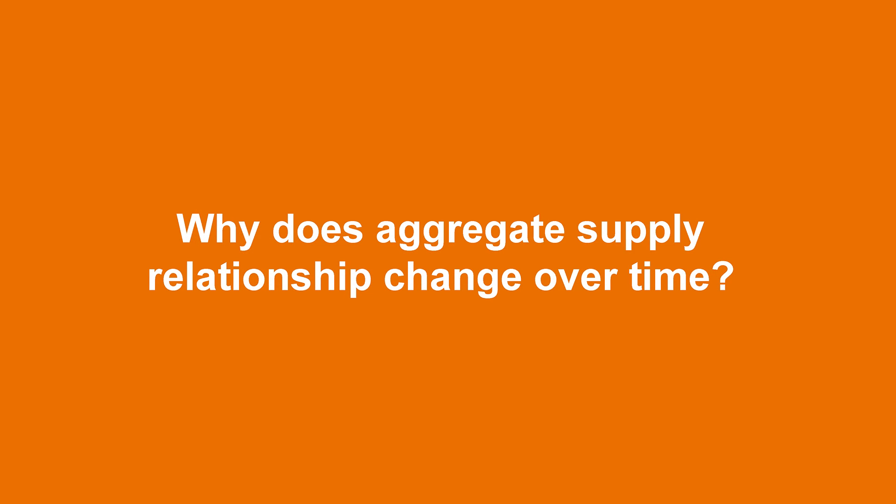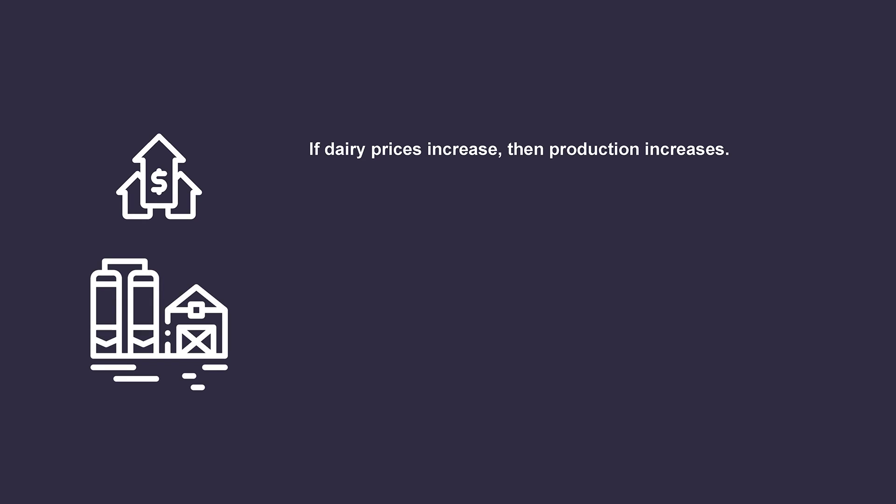Why does the supply relationship change over time? Let's take a single dairy farmer as an example. If dairy prices increase, the dairy farmer would try to take advantage of the high prices and ramp up production. They would work their cows extra hard, hire temporary workers, and run the machines all night to get all the milk they can. So over the short run, higher prices means more quantity supplied.